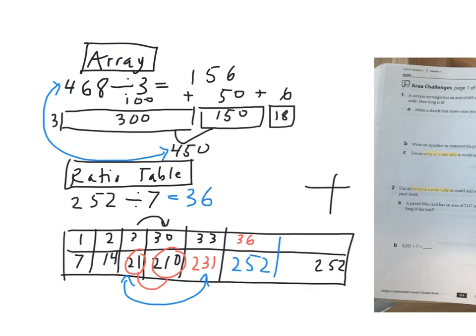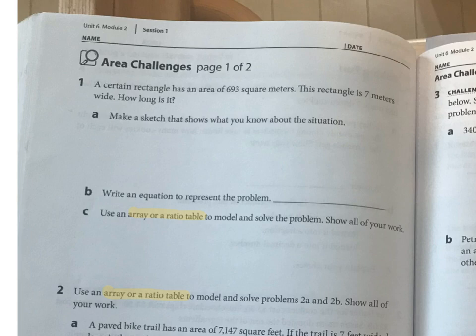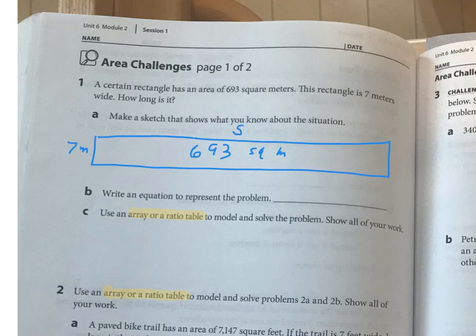Let's get into these problems. We're talking about rectangles here, 693 and 7 meters wide. This is what it looks like in the equation. I called the side 's' for side.